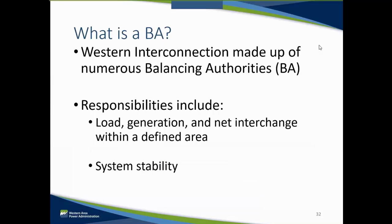Today in the Western Interconnection, the interconnection is maintained by a number of individual entities called balancing authorities. Balancing authorities account for all load, generation, and net interchange. There are a specific set of resources and interchange meters assigned to each BA. The BA is responsible for ensuring system stability by constantly balancing the generation, load, and interchange within its designated area.